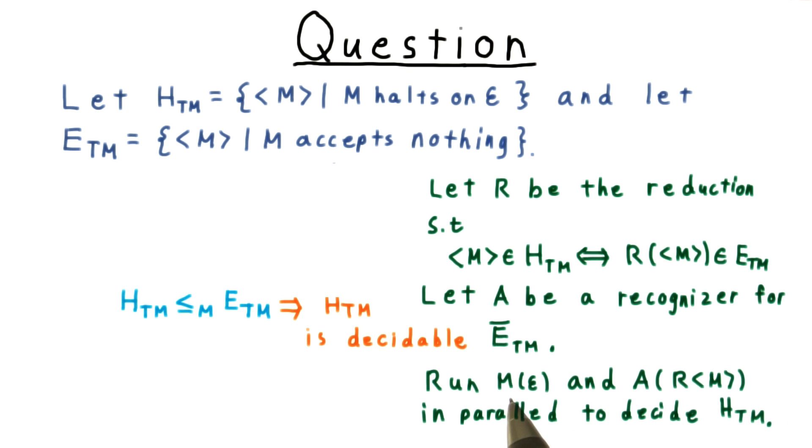So to decide H, we run M on the empty string and A on R of M in parallel. If M halts on the empty string, we recognize that fact. And if it does not, well then R of M must be in E complement, so A must recognize that. And running these in parallel allows us then to decide the halting problem. One way or another, we're going to get an answer from one of these two machines.